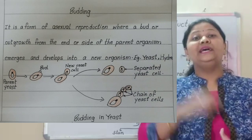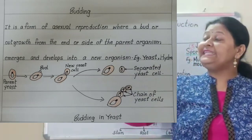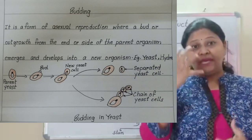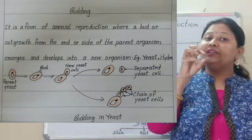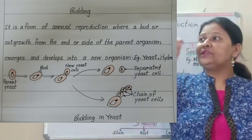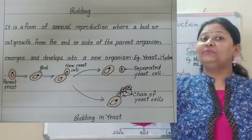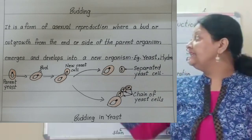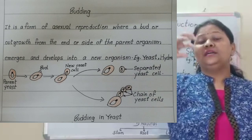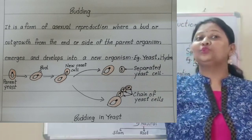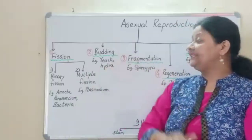Now coming to budding. A bud is actually an outgrowth. Looking at this picture of a yeast cell — from the parent yeast cell, an outgrowth develops on the parent cell. Then the parent nucleus divides into nuclei, and one nucleus goes to the bud. As the bud grows, it gets detached from the parent body, and from that bud, one new organism arises. Budding is the process in which an outgrowth forms, the nucleus divides, the bud grows and detaches, and develops into a new organism. Examples are yeast and hydra.